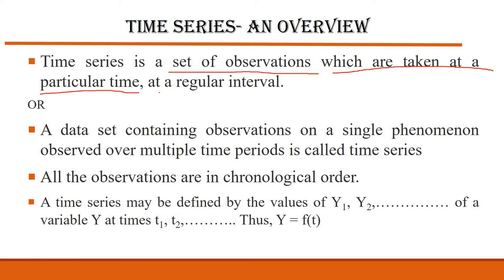The next feature is that whatever series you are taking should be at a regular interval. If you are taking monthly data, you have to take it monthly only — January, then February, then March and so on. The time gap between two different observations should be equal. You can take quarterly data or yearly data, but the main thing is there should be a regular interval of time, not an irregular one.